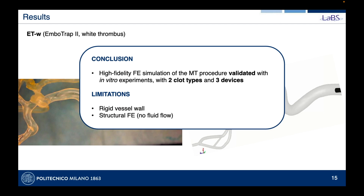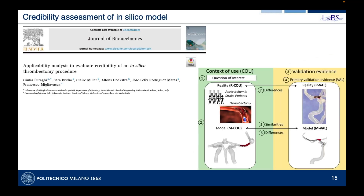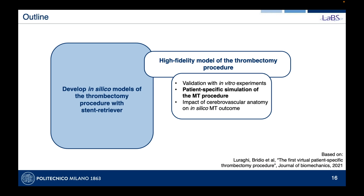We were quite happy with these results. Our high-fidelity finite element simulation was validated with two clot types and three different devices. Limitations include that vessel walls were modeled as rigid — acceptable since in the brain vessels are surrounded by grey matter and don't move much — and there is no fluid flow in this structural simulation. However, the agreement with experiments suggests stent-thrombus interactions prevail over fluid flow effects. We also performed an applicability analysis following the credibility framework in accordance with ASME V&V40.